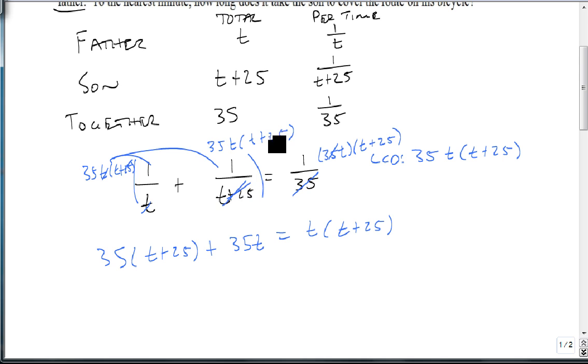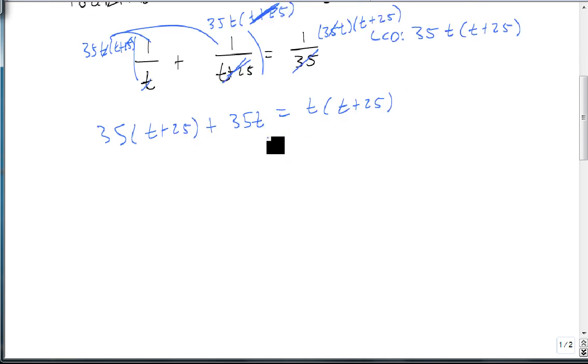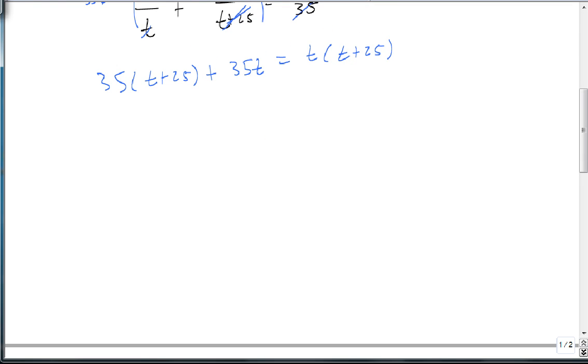So if we were to put this here, we could see it better that way. Alright, so here's our equation. And if you notice, it's going to turn into a quadratic equation really quickly. Because on the right, we're going to get t squared plus 25t.